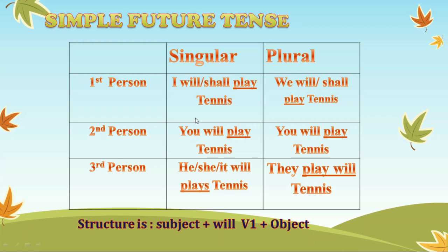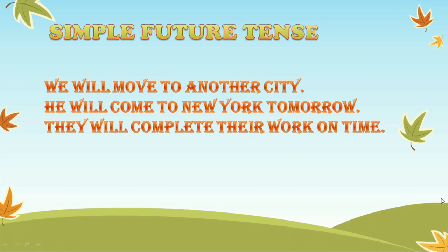To form a simple future tense, always remember the formula: subject plus will or shall plus first form of verb plus object. For example: 'We will move to another city' — we is the subject, move is the first form of verb. 'He will come to New York tomorrow' — he is the subject, come is the first form of verb. 'They will complete their work on time' — they is the subject, complete is the first form of verb.